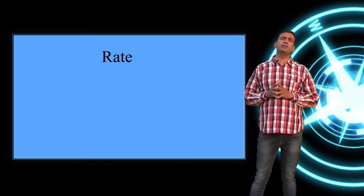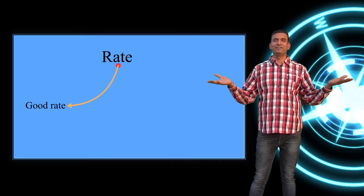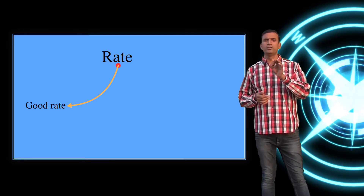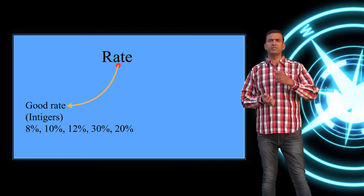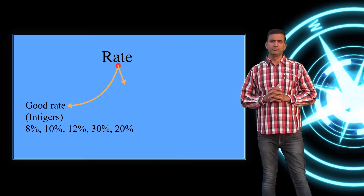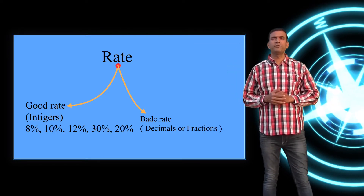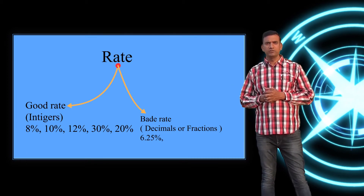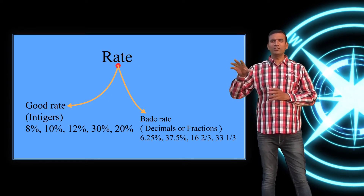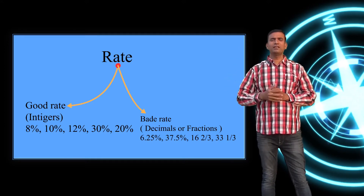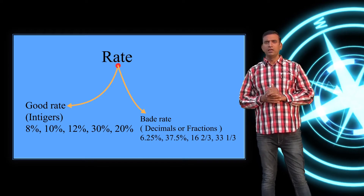Since rate is the most important part, we consider the rate in two ways — in my terms, either a good rate or a bad rate. A good rate is one given in integers: 8%, 10%, 12%, 20%, 30%, etc. A bad rate is one given in decimal or fraction form — like 6.25, 37.5, 16⅔, or 33⅓. Rates not in integers are called bad rates.